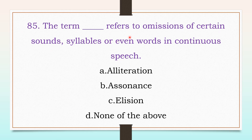The term which refers to the omission of certain sounds, syllables, or even words in continuous speech: options are alliteration, assonance, elision, or none of the above. The answer is C, elision.